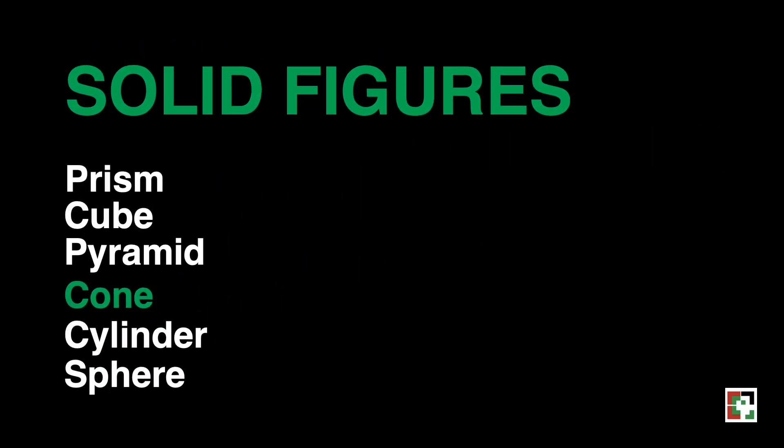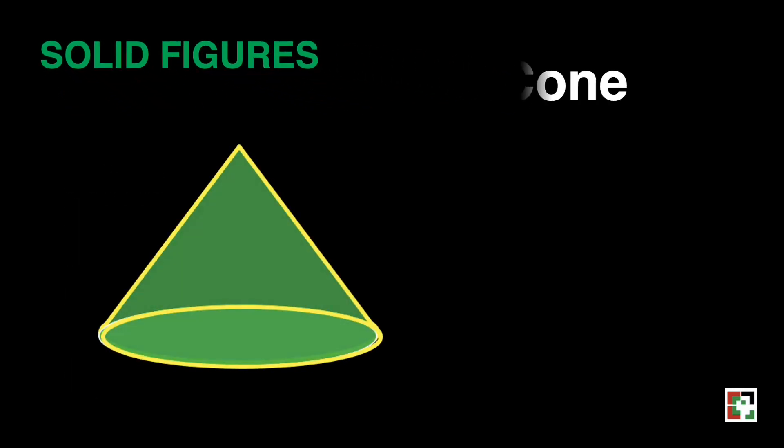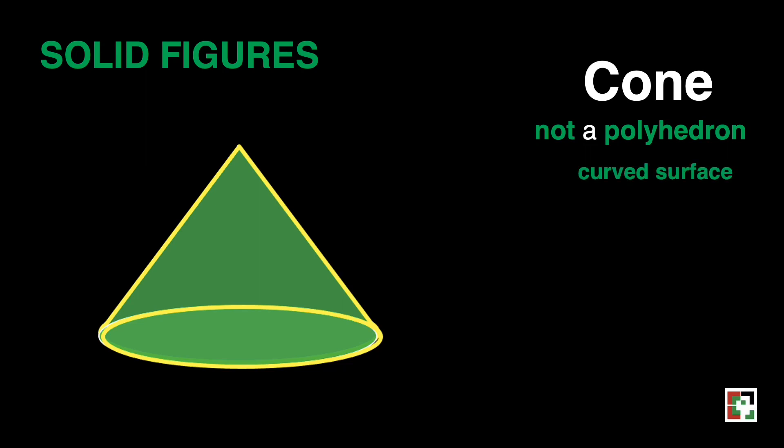Let us have the cone. This is a cone. A cone is not a polyhedron because it has a curved surface. It has a circular base connected to the vertex.